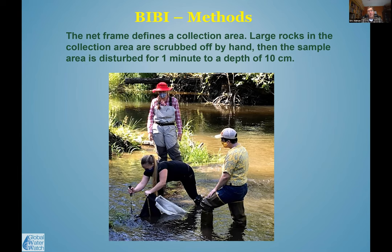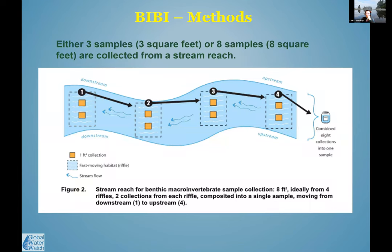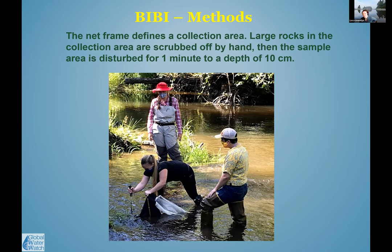This is a photo of volunteers with Whale Scout doing BIBI on Bear Creek last summer. The reason you disturb to 10 centimeters is that grazers are on top eating algae, leaf debris eaters are below, and predators — often pollution-intolerant species — burrow down quickly when disturbed. Going 10 centimeters deep helps capture those predators. Dragonflies, for example, are long-lived predators that can live up to six years in some streams.